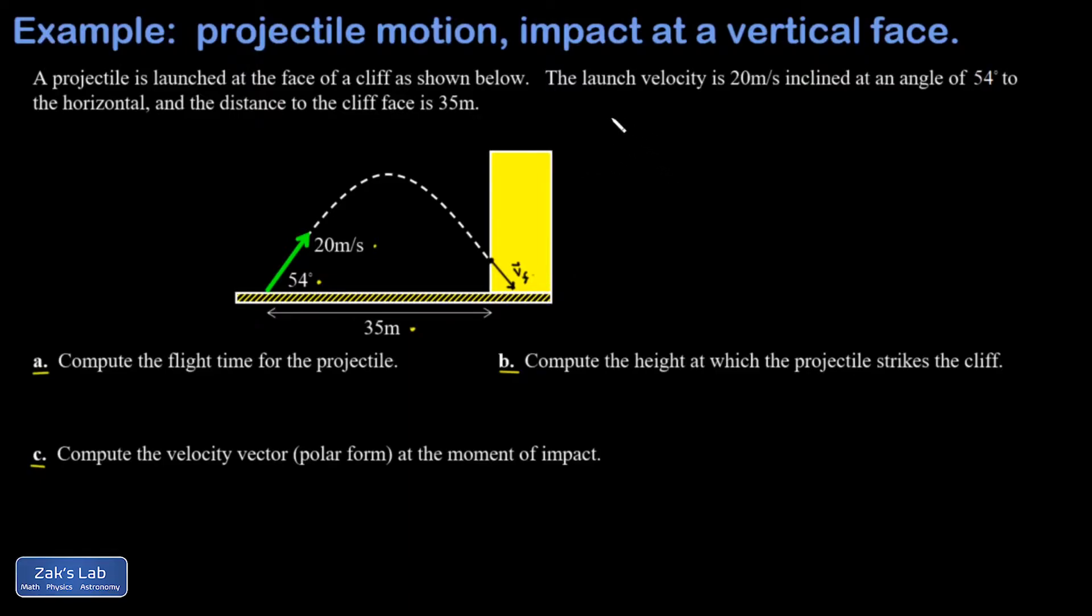To review, the key to projectile motion problems is that the horizontal and vertical motion can be unlinked. The horizontal motion is given by x equals x naught plus v naught x times t.